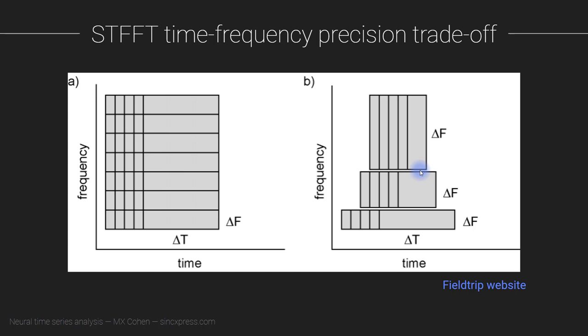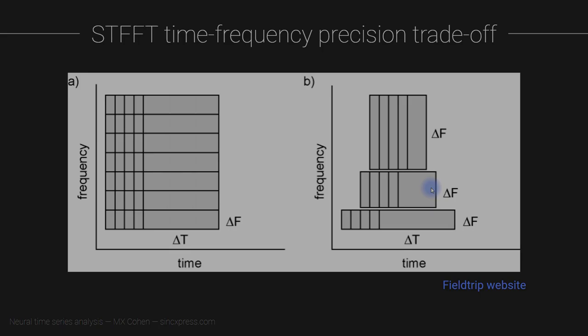So these three methods, wavelet convolution, filter-Hilbert and short-time Fourier transform are not really fundamentally different from each other. There are some reasons to prefer one method over the other. And that is something that I'm going to discuss in more detail in a video very soon. That video is called comparing Wavelet, filter-Hilbert and short-time FFT.